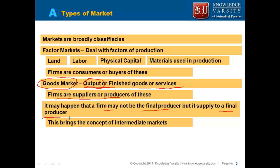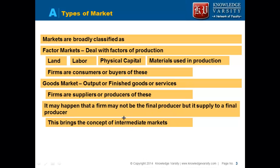As an example, suppose you have Maruti car. In the Maruti car, seats are being supplied by another company, which Maruti is consuming, and then Maruti directly sells the car to the consumer. So we have intermediate markets also, where some manufacturers are supplying to other manufacturers.